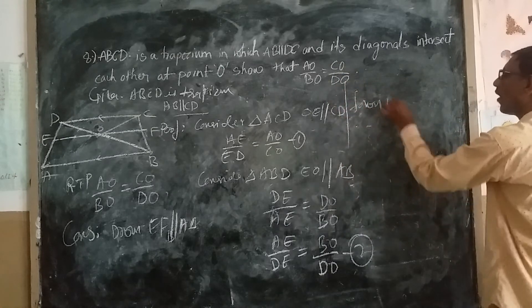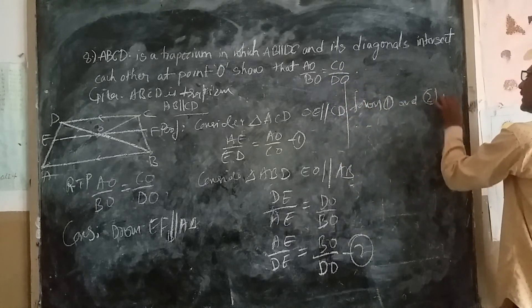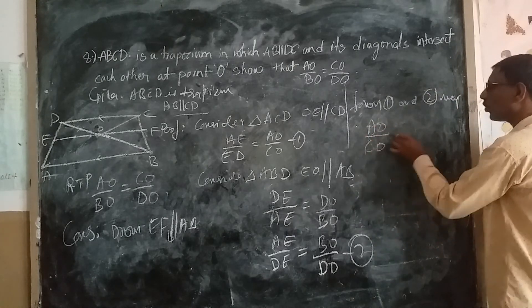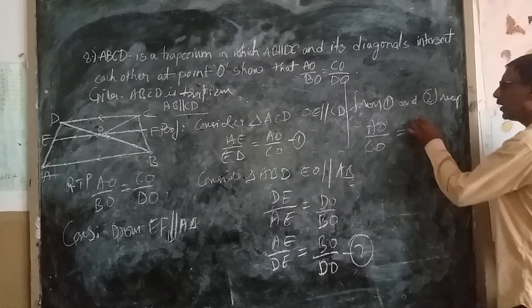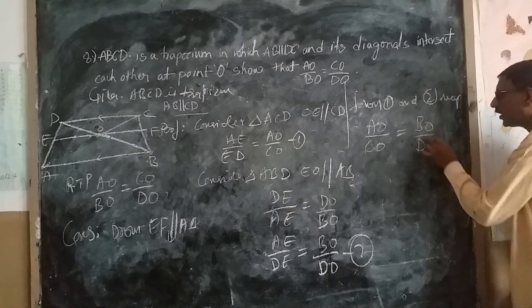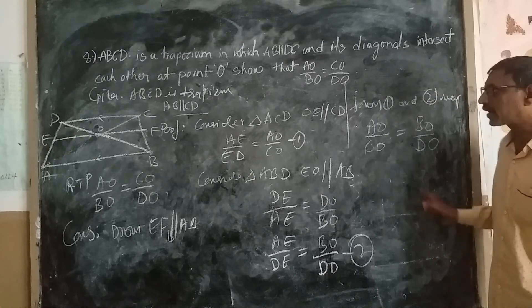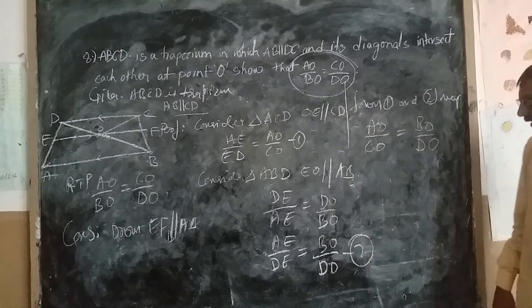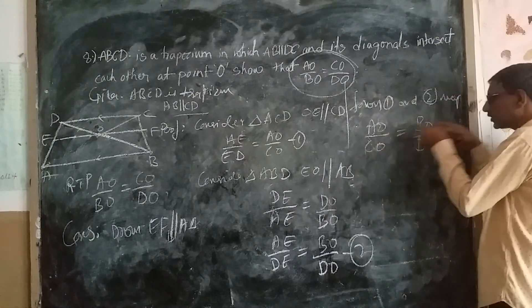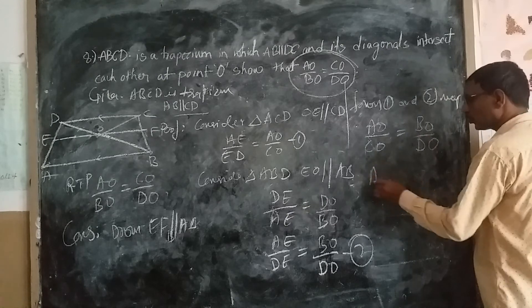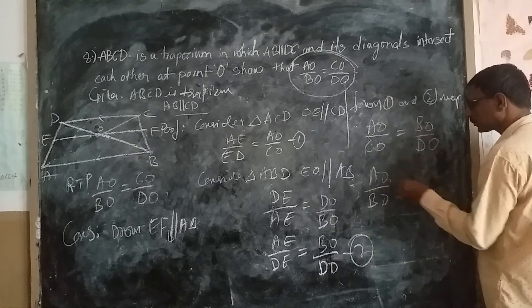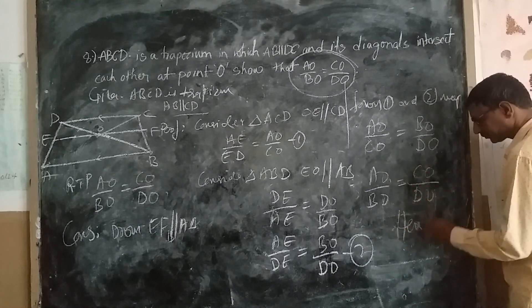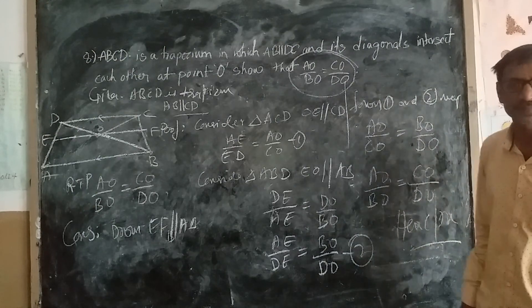From equation one and equation two, we get AO/OC is equal to DO/BO, which means AO/BO is equal to CO/DO. Hence proved. Very simple.